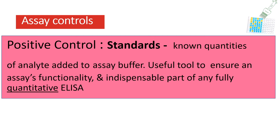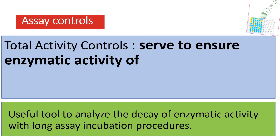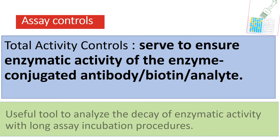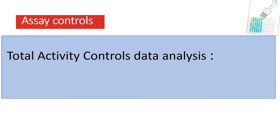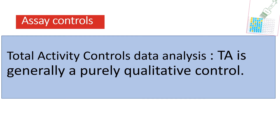In a competitive ELISA you would also include a total activity well. This well controls for and ensures enzyme activity throughout the length of the incubation. The total activity well ensures enzymatic activity of the enzyme-conjugated antibody, biotin, or analyte. In this well, only the substrate and enzyme conjugate are incubated together during assay development. This is used to monitor enzyme activity over a long assay incubation — if the enzyme and substrate are reacting as they should over a long period, your responses can be validated and you know the signal is genuine and not due to the substrate or enzyme conjugate decaying over time.